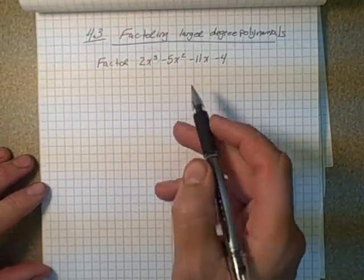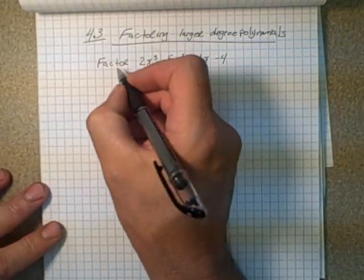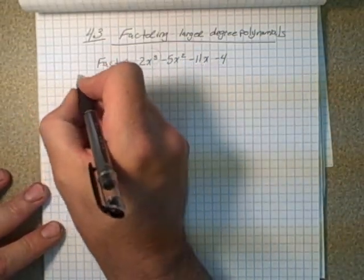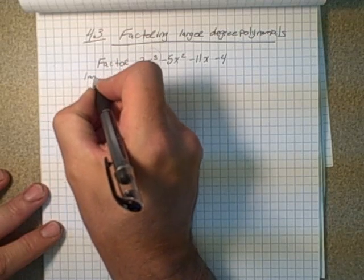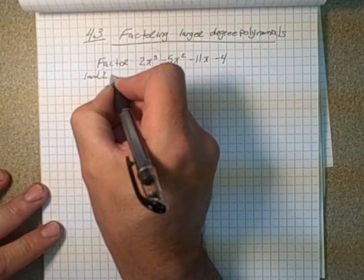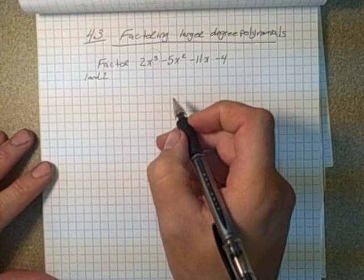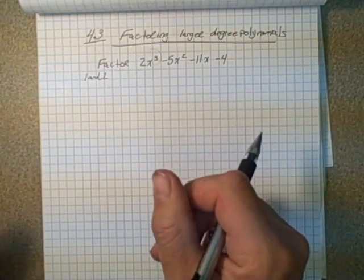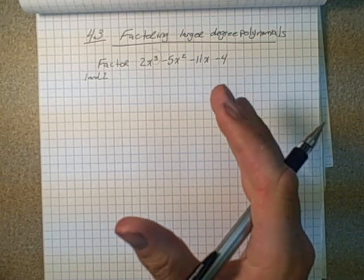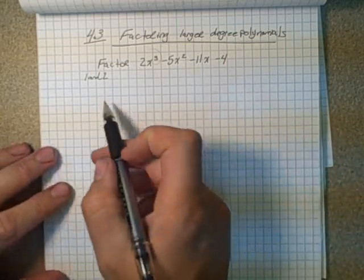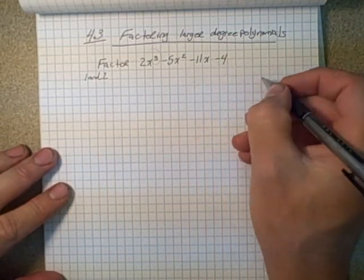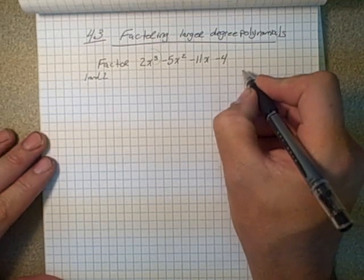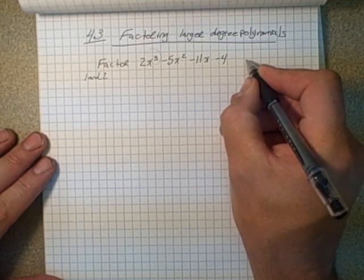If we look at our case here, what are the factors of 2? Factors of 2 are 1 and 2. So that means you can have 1x or x, or you can have factors of 2x as well. What are the factors of 4? Well the factors of 4 are 1 and 4, 2 and 2.